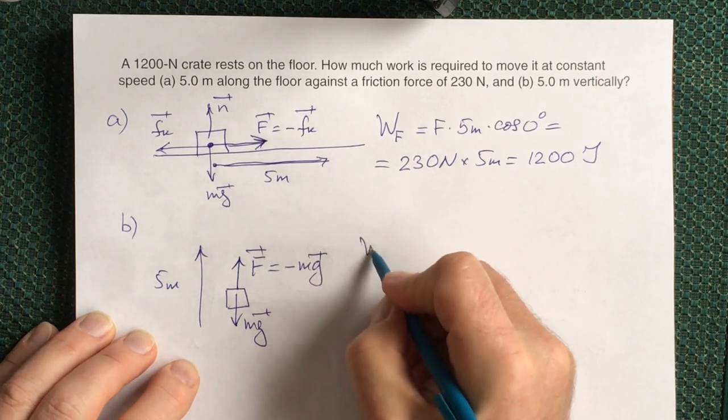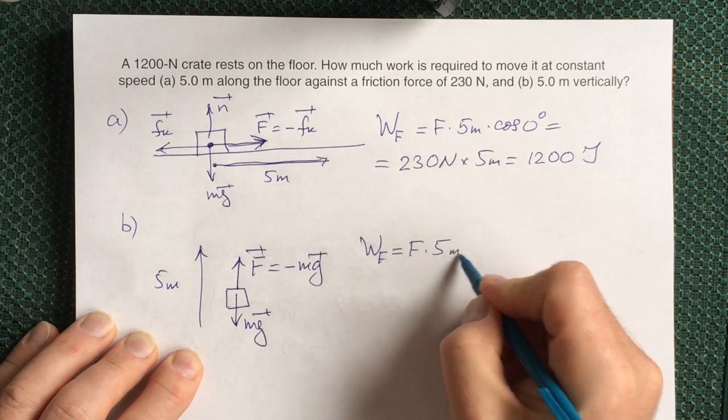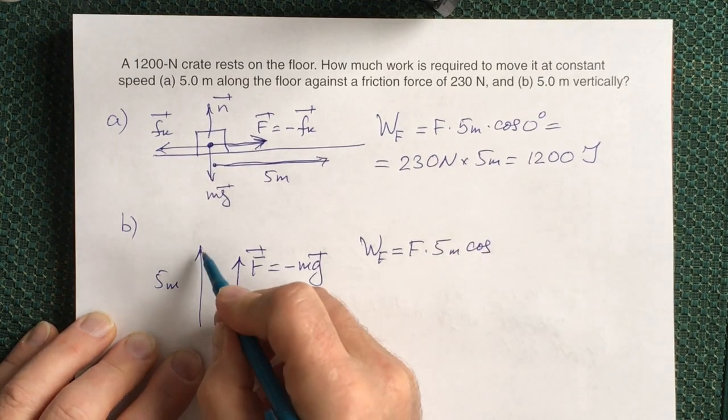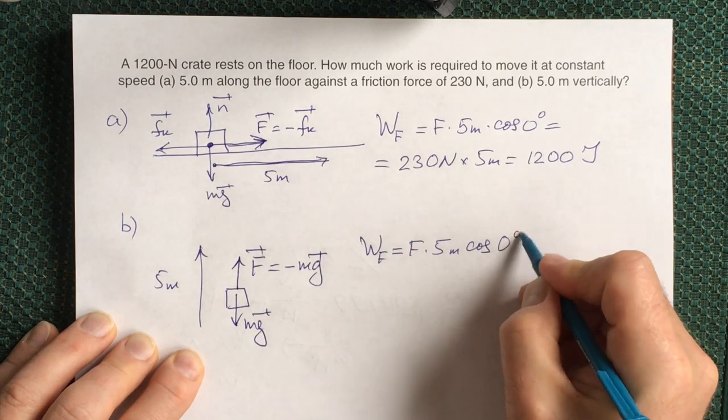So we can claim that the work done by our force would be the force times displacement times cosine of the angle between displacement vector and force vector, 0 degrees in our case.